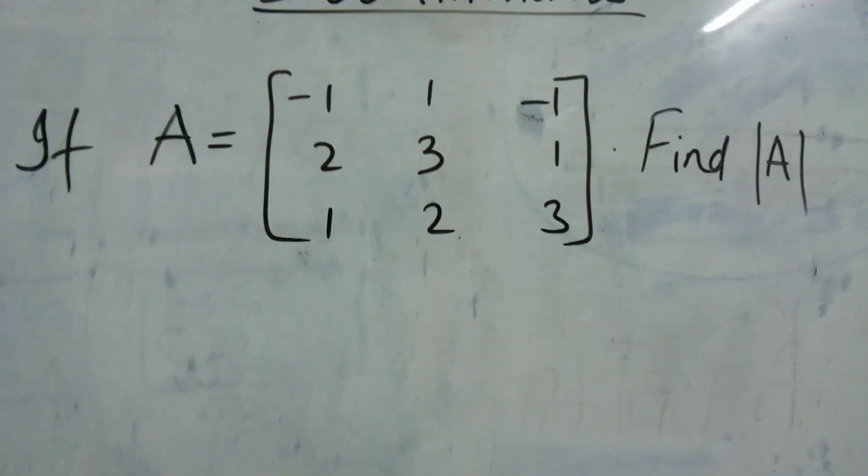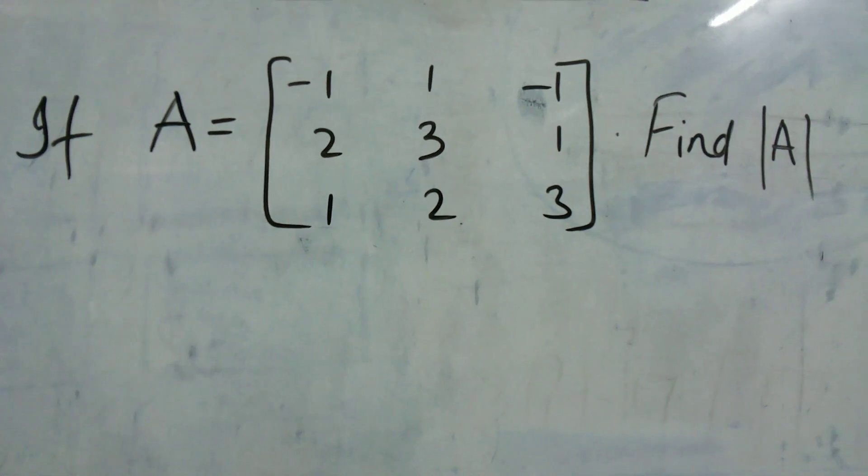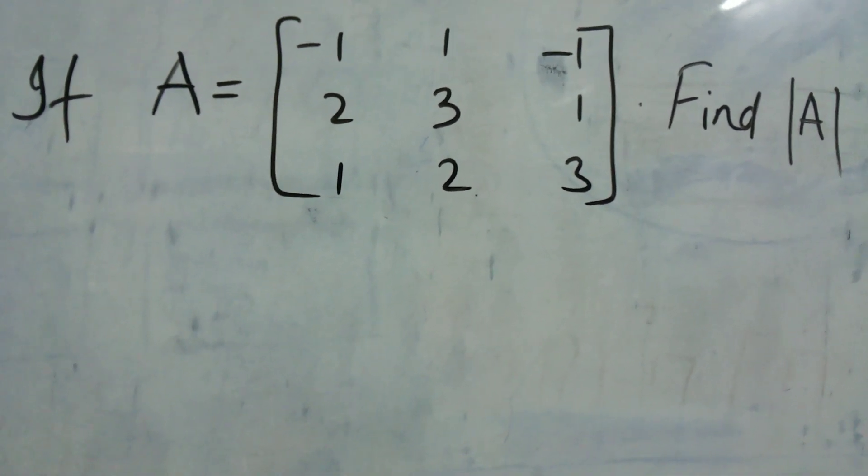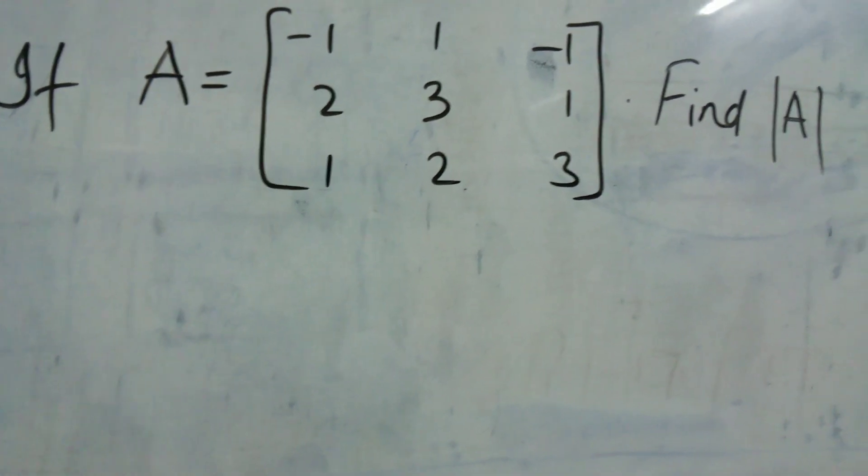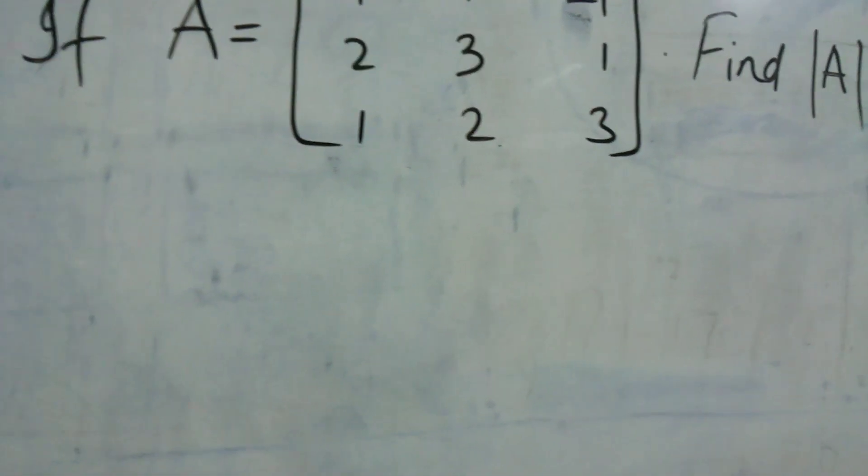So if A is a matrix where the elements are minus 1, 1, minus 1, 2, 3, 1 and 1, 2 and 3, we need to find the determinant of A.